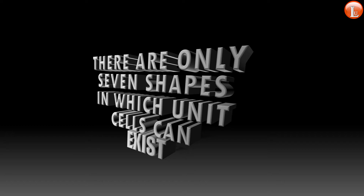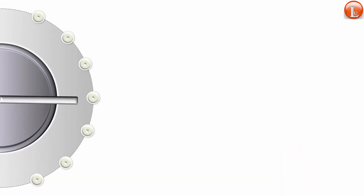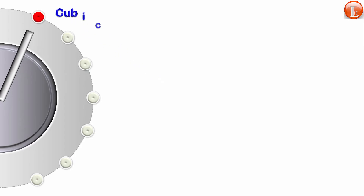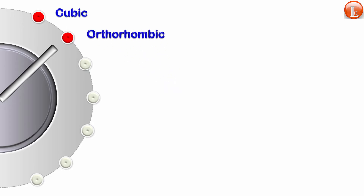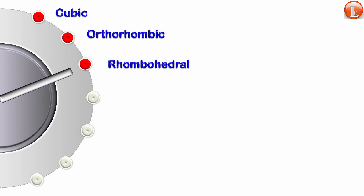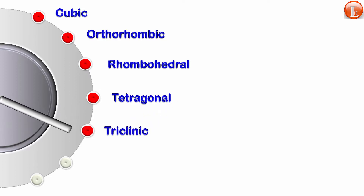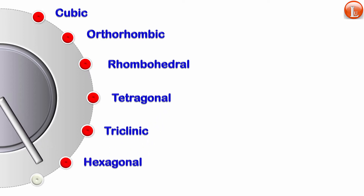Therefore all unit cells pertain to only seven shapes, and these shapes are: cubic, orthorhombic, rhombohedral, tetragonal, triclinic, hexagonal, and monoclinic.